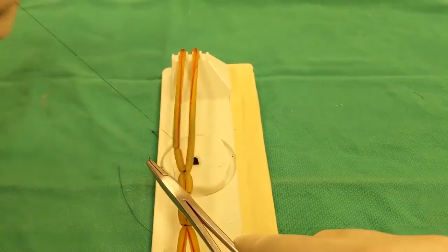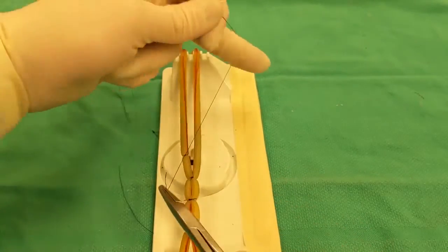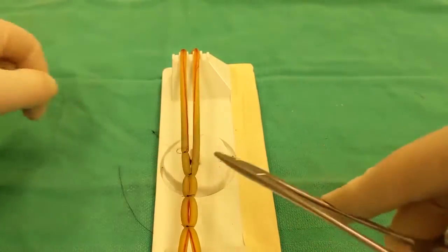So you want to tie it nice and tight, and you'll throw another one to create a square knot to lock that ligation. Then you'll put another square knot on top to make sure the ligature doesn't slip.